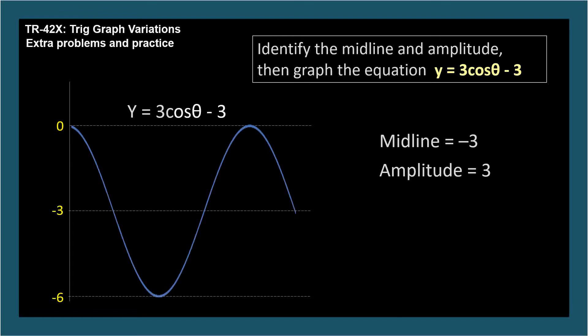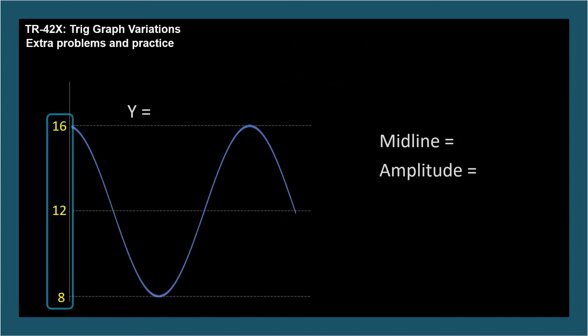Let's take this opportunity to do another quick problem. Let's go the other direction. What if I changed the y-axis labels like this? What's the amplitude, midline, and equation of this graph? By inspection, the midline is 12, and the amplitude is 4. So the equation is y equals 4 cosine theta plus 12.